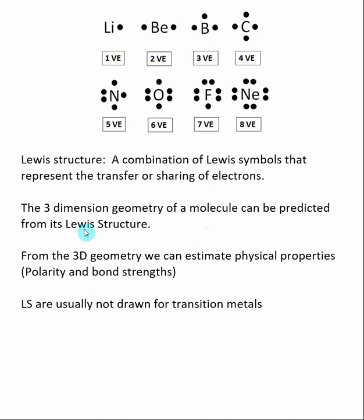Later on in this chapter, we're going to discuss that the Lewis structure can allow us to predict the three-dimensional geometry of a molecule. Then from the three-dimensional geometry of the molecule, we can estimate other properties like polarity and bond strength inside of the actual molecule.